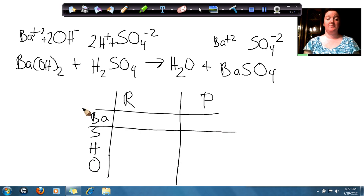So if we look at barium, on this side I have 1 barium. On this side I have 1 barium. If I look at sulfur, I have 1 sulfur here. On this side I have 1 sulfur.